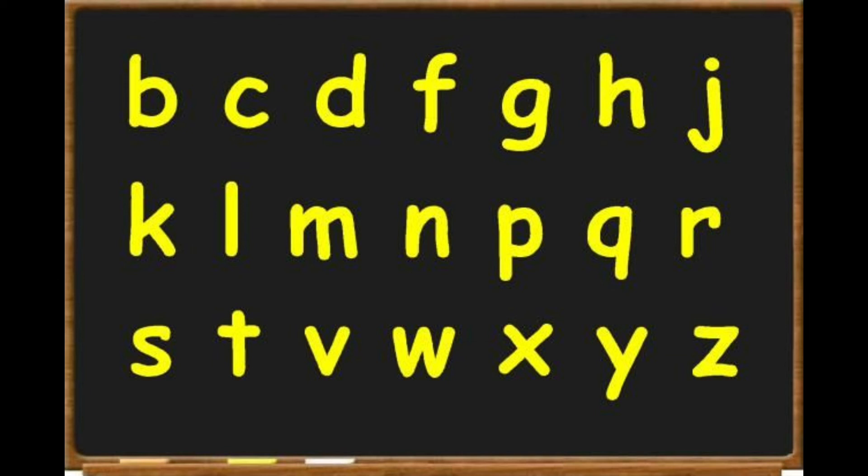So children, today we have learned that there are 26 English alphabet. Among them, 5 are vowels and 21 are consonants. Now children, you have to keep it in mind that there are 5 vowels: A, E, I, O, U. That's all.